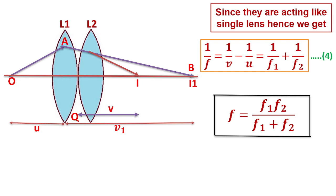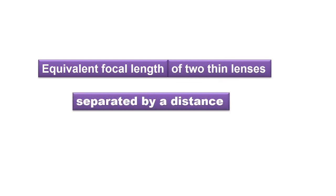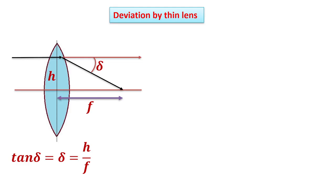Now we will find the equivalent focal length of two thin lenses separated by a certain distance D. There is a deviation of a light ray by a thin lens. This deviation delta forms an image at a point on the principal axis at focal length F. So tan(delta), which equals delta, is equal to H divided by F.